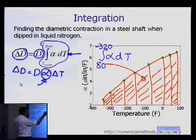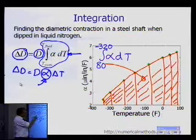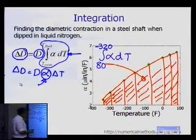So you are basically approximating this integral by adding all these trapezoids, and then you multiply by the diameter, and you get what the change in diameter is.